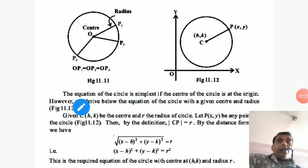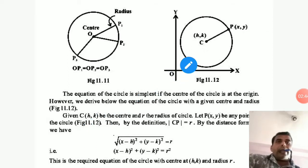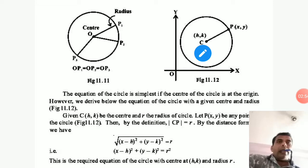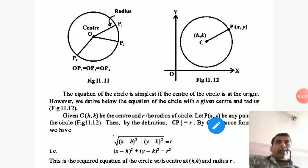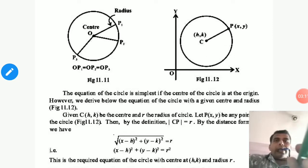Now see how you will find the equation of the circle. The equation is simplified if the center of the circle is at the origin. We derive the equation of the circle with a given center and radius. Suppose center C is at (H, K), R is the radius, and let P(X, Y) be any point on the circle. By definition, CP equals R, and by the distance formula, we find that distance.